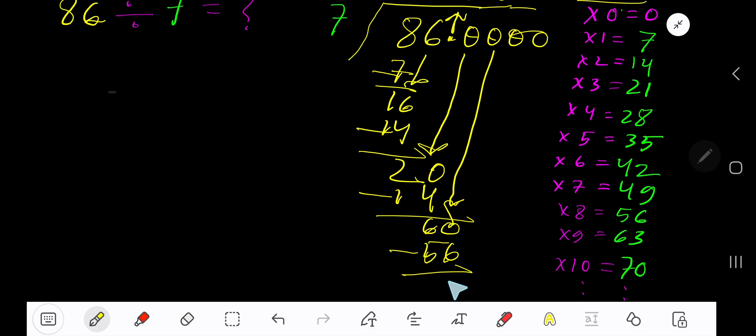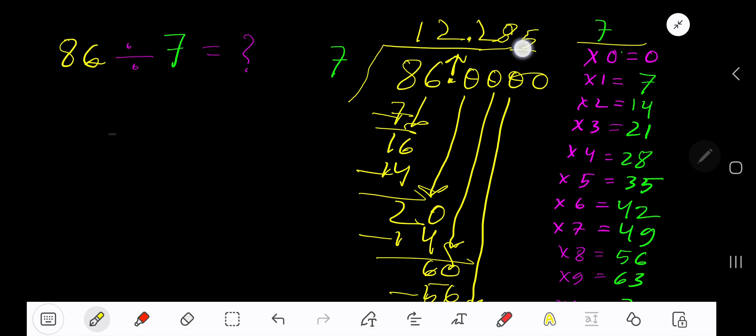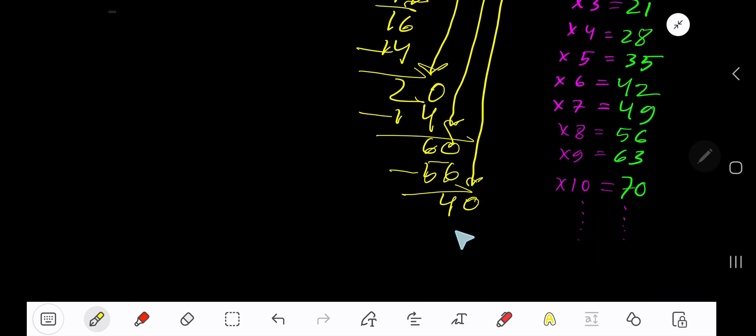Bring down another 0. 7 goes into 40 how many times? 6 times 42, which is too large, so 5 times. 5 times 7 is 35. If you subtract, you are getting 5.